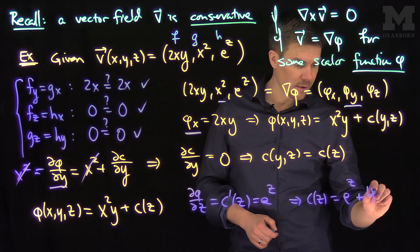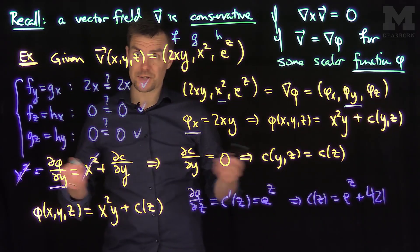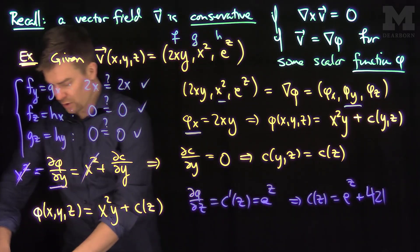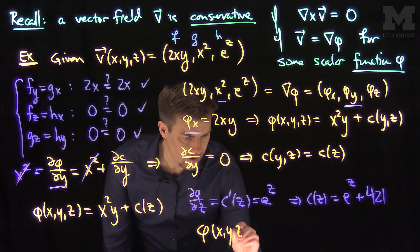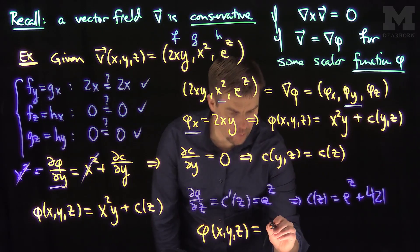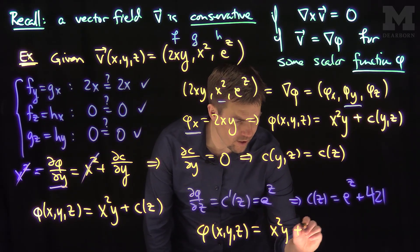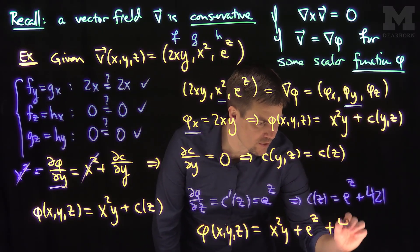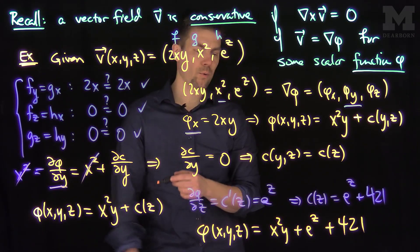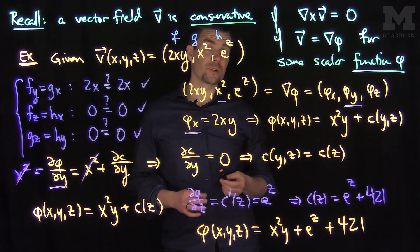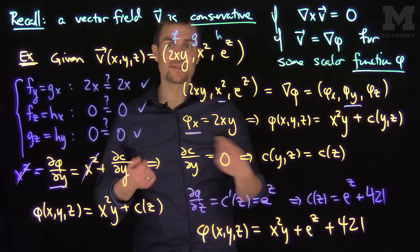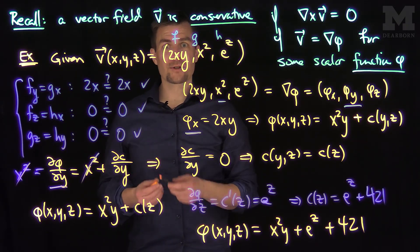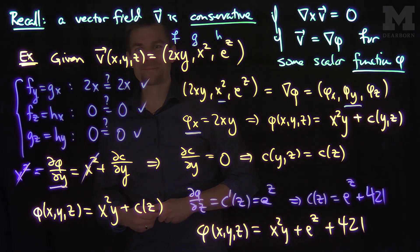So let's just pick my favorite number, 421, for example. And we can conclude from this that the scalar potential is X squared Y plus E to the Z plus whatever constant you want. Pick your favorite number. So there's infinitely many potentials, but they're all parameterized by a single constant over here. So this is how we find the scalar potential of a conservative vector field. Thank you very much.